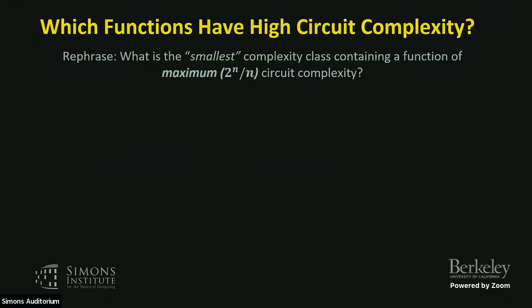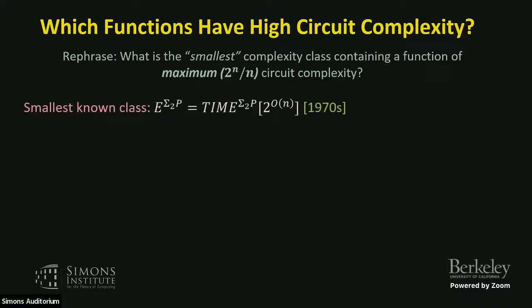To rephrase: we're going to ask, what is the smallest complexity class containing a function of maximum circuit complexity? I put 'smallest' in quotes because there could be some incomparable classes that each contain a hard function. One of the smallest known classes is 2^{O(n)} time with a Sigma_2^P oracle.